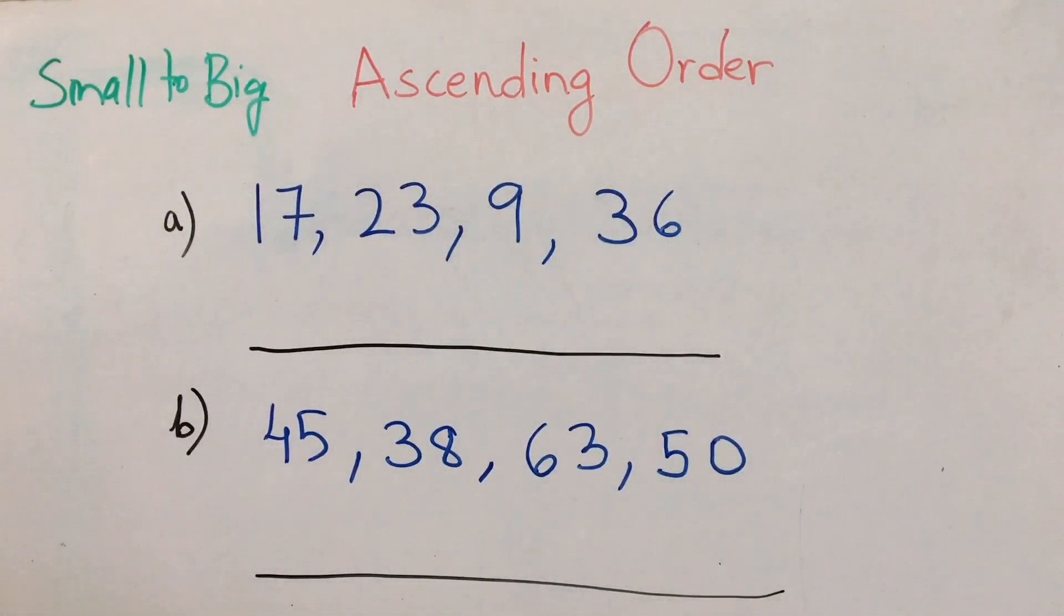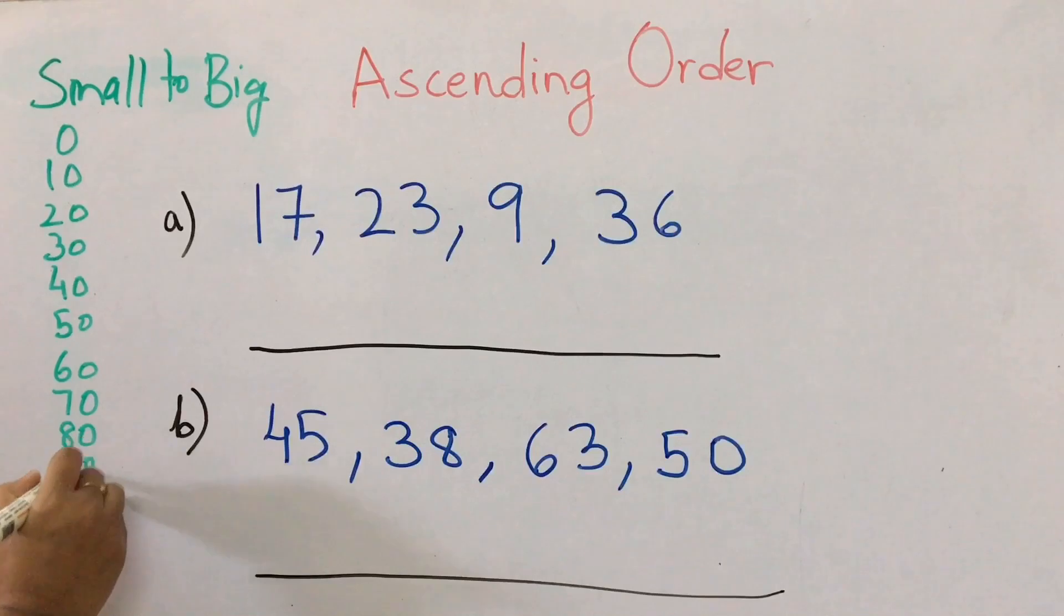Okay, so I'll just write the range. I'll start from 0, 10, 20, like that. So we have 0, 10, 20, 30, 40, 50, 60, 70, 80, 90, and 100. So these are ascending numbers less than 100.